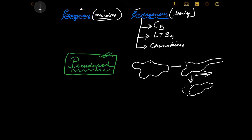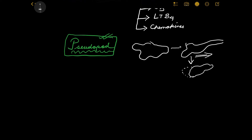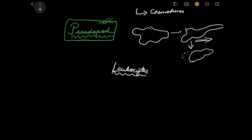In this way, the leukocytes reach the source of the invading microbes, or whatever the source of inflammation might be. But there is another question: what leukocytes are we talking about? We use the vague term 'leukocytes,' but there are five types. Also, are we only talking about leukocytes or other molecules as well? The answer to this question actually depends on the time frame of the infection.